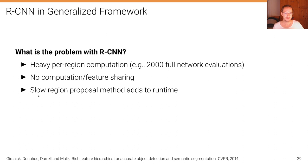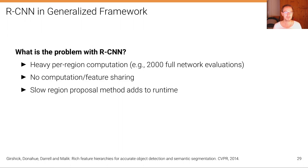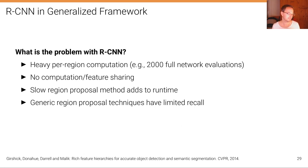Another disadvantage is the slow region proposal method that adds to the runtime. These classical techniques don't use deep learning, they run on the CPU, and they are quite slow — not ideal if we are targeting frame-rate real-time object detection. Additionally, these generic region proposal techniques have quite limited recall: despite choosing a low threshold, they still don't predict a box for all ground-truth objects.